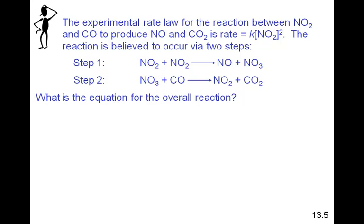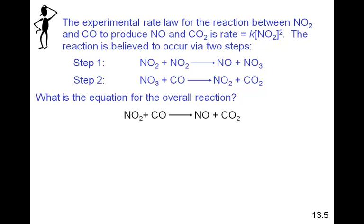The experimental rate law for the reaction between NO₂ and CO to produce NO and CO₂ is rate equals K times the concentration of NO₂ squared. The reaction is believed to occur in two steps. In the first step, NO₂ plus NO₂ reacts to form NO and NO₃. In the second step, NO₃ plus CO reacts to form NO₂ and CO₂. If we cancel out the NO₃, which is formed in an earlier step but consumed in a later step and is considered an intermediate, we get the overall reaction.